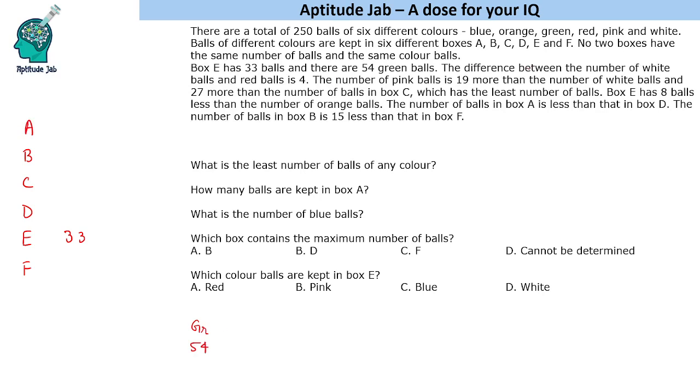The difference between the number of white and red balls is 4. When we say difference, it could be white minus red or red minus white, anything, so we will come to it later. The number of pink balls is 19 more than the number of white balls and 27 more than the number of balls in box C.